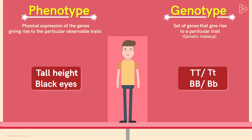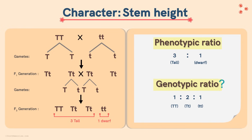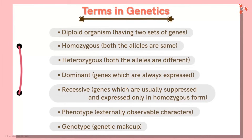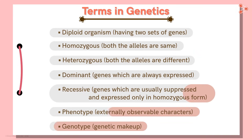Getting back to our experiment — we have one homozygous tall plant, two heterozygous tall plants, and one homozygous dwarf plant, so the genotypic ratio is 1 to 2 to 1. Now we are all well versed with the crosses and a few important terms in genetics.